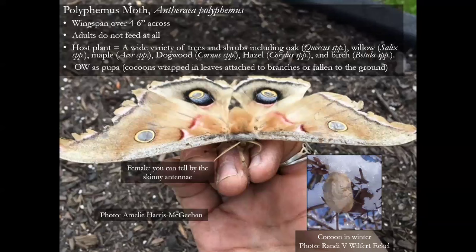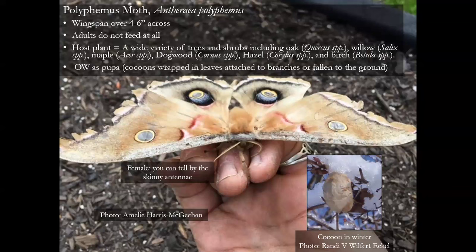The Polyphemus moth is another enormous silk moth. This picture comes from Emily Harris McGeehan. You can actually see this is a female — she's a little beat up, an older specimen. You can tell it's a female because she has skinny antennae. The males have very big, puffy antennae that they use to help them find the females. This is a picture of the cocoon in winter, with snow on it, attached to a branch along the Delaware River. These moths are four to six inches across and feed on a variety of plants including dogwood, hazel, and birch.